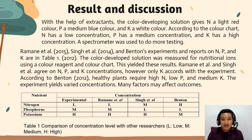Remaner and Benton are agreed on NPK concentration; however, only K agrees with this experiment. According to Benton 2012, healthy plants require high N, low P, and median K. The experiment yields suggest that concentration may not be the only factor affecting the outcome.